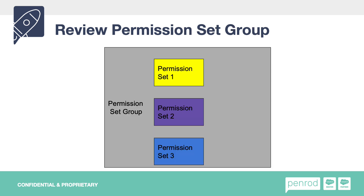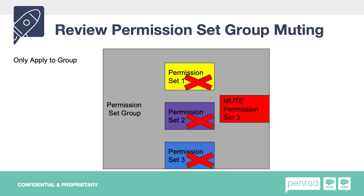Let's also review permission set groups. A permission set group is a collection of permission sets, so you can add permission sets to a permission set group, and when you assign that permission set group to a user, the permission sets in that group will also be assigned to the user underneath that group. Another cool feature of permission set groups is that you can mute — which means you can build a muting permission that applies to that group, and that group will then have those permissions muted, so users won't have that access. For example, if permission sets 1, 2, and 3 all grant delete access to the account record, and you create a muting permission that removes delete access, the delete access will be removed from this group.